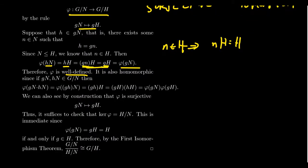The homomorphic property works similarly. Take two cosets gN and hN in G/N. Then φ(gN · hN) = φ(ghN) = ghH. Since H is a normal subgroup we can factor that coset as gH · hH, which is φ(gN) · φ(hN). So the map is indeed a homomorphism.